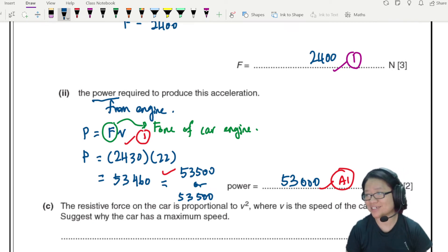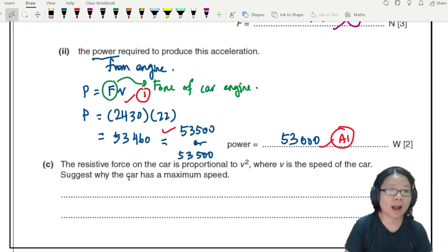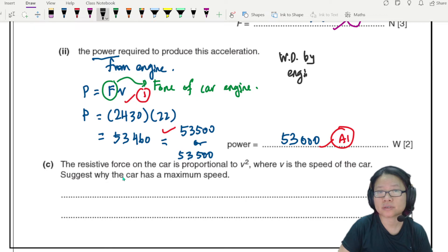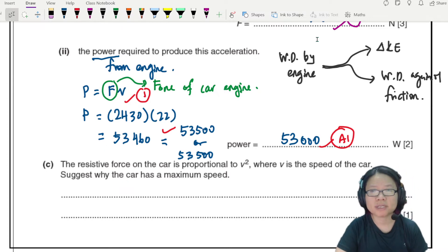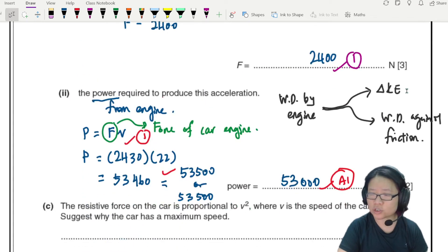Cannot write 54,000. By the way, if you want to think about conservation of energy, it is work done by the engine. Petrol chemical energy, not 100% efficient, but some of it goes to the change in kinetic energy and some of it goes to work done against friction or resistive forces.